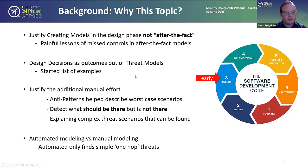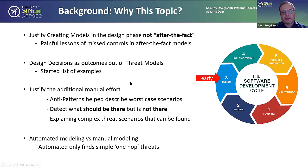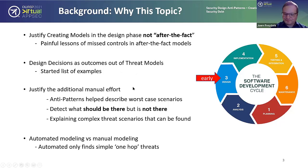The question also came up: what can you do with automation versus manual modeling? I was doing manual modeling initially by prototyping. Automation is currently only limited to finding what I call single-hop threats — something related to a single element. The more complex threats cannot currently be found because you'd need some kind of graph search or artificial intelligence system to go through a complex setup.